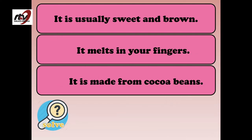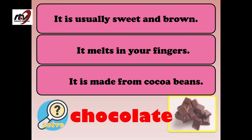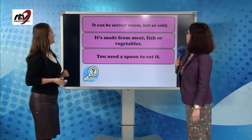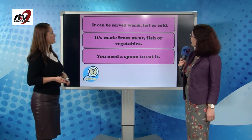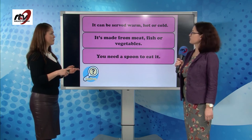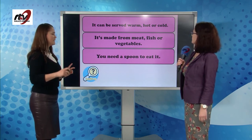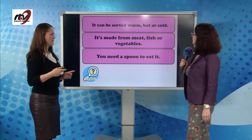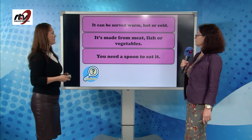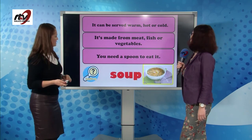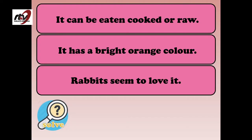It is usually sweet and brown. It melts in your fingers. It's made from cocoa beans and it's delicious. It's chocolate. Next: it can be served warm, hot or cold. It's made from meat, fish or vegetables, and you need a spoon to eat it — you put it in a bowl. It must be the soup. Next: it can be eaten cooked or raw. It has a bright orange color. Rabbits seem to love it. It's the carrot.